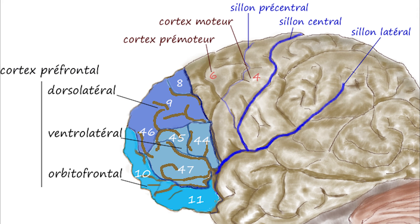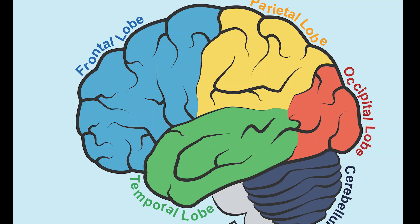The gyri are separated by sulci. The precentral gyrus is in front of the central sulcus and behind the precentral sulcus. The superior and middle frontal gyri are divided by the superior frontal sulcus. The middle and inferior frontal gyri are divided by the inferior frontal sulcus.